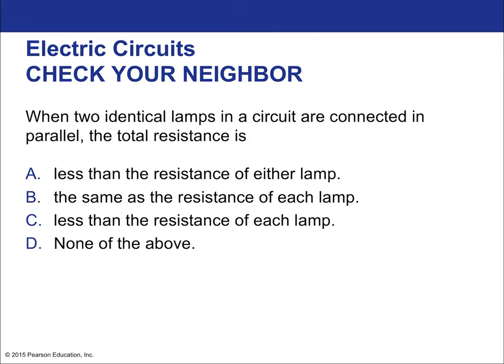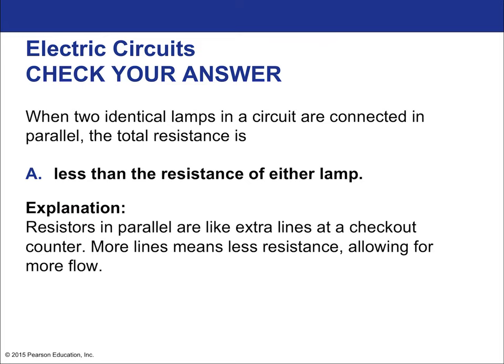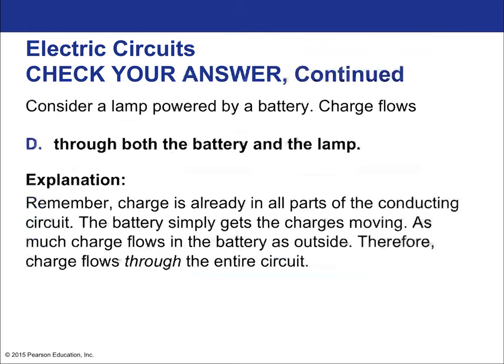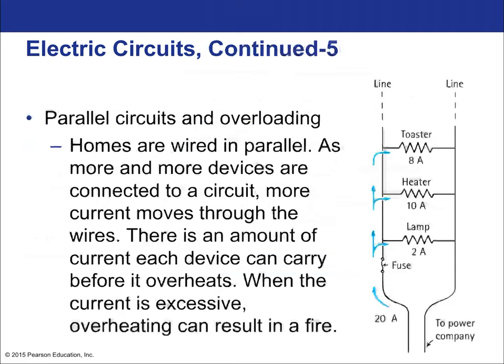When two identical lamps in a circuit are connected in parallel, the total resistance is reduced. Consider a lamp powered by a battery: charge flows through both the battery and the lamp — it's a continuous circuit, and the battery is part of it. Batteries have an internal resistance that sometimes needs to be accounted for. Homes are wired with parallel circuits, which makes sense — otherwise, if it were a series circuit and one thing broke, the whole home would shut down. With parallel wiring you can blow a single breaker without affecting everything else.